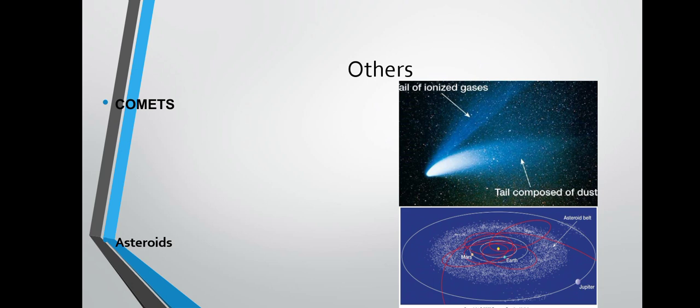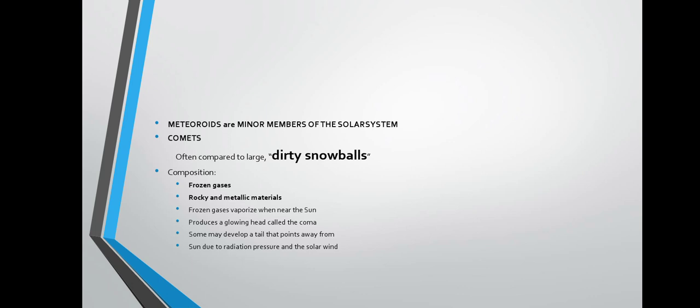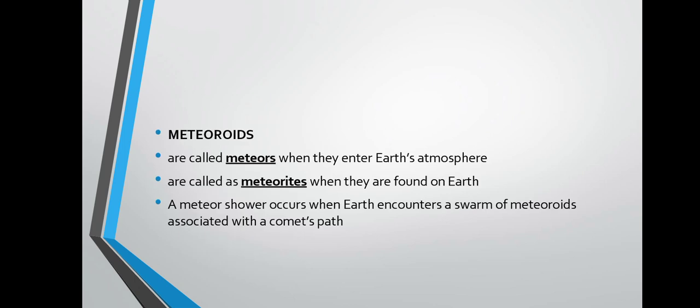There are also other objects in the solar system: comets and asteroids. Comets are often compared to large dirty snowballs — they are frozen gases, rocky and metallic materials. Frozen gases vaporize when near the sun. Meteors are what we call meteoroids when they enter the Earth's atmosphere, and they are called meteorites when they are found on Earth's surface. A meteor shower occurs when the Earth encounters a swarm of meteoroids associated with a comet's path.